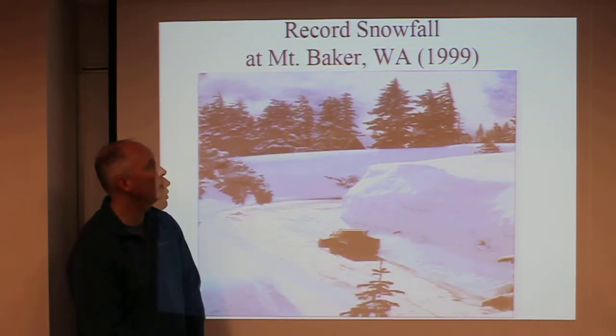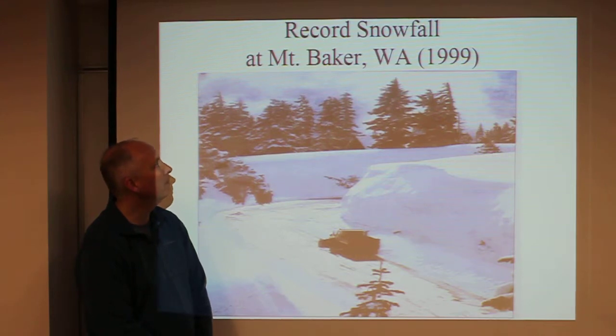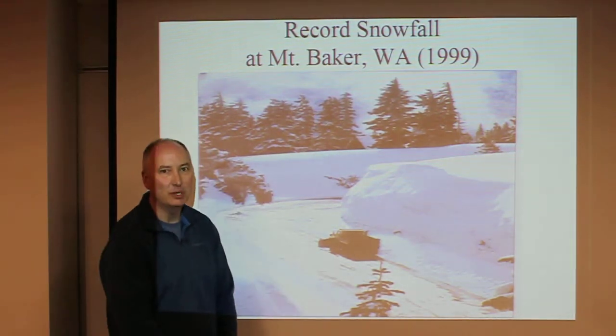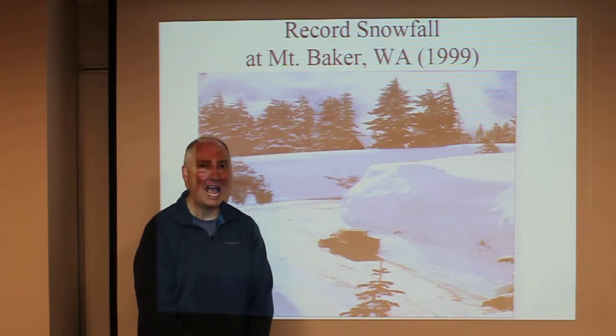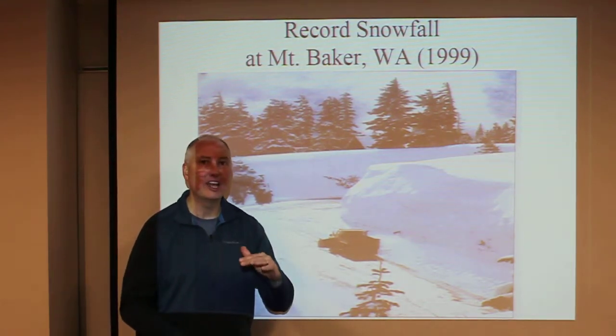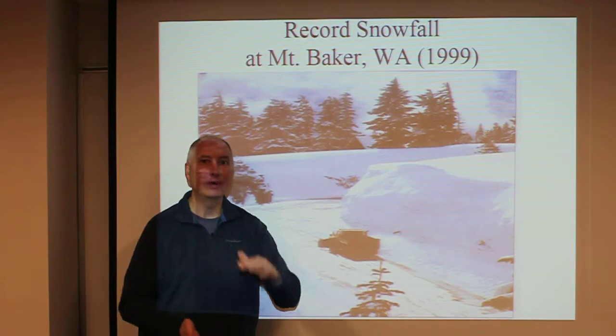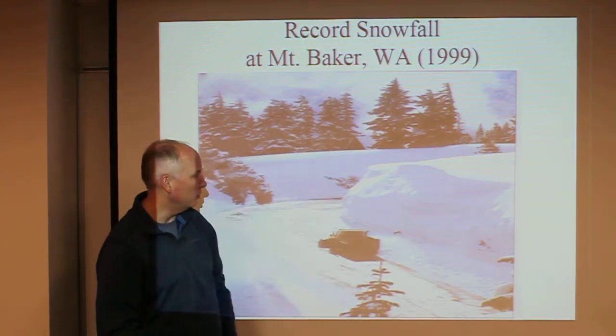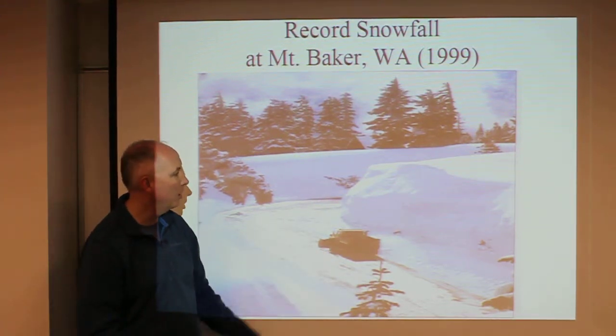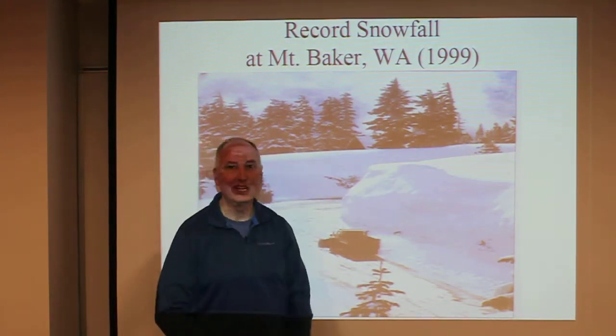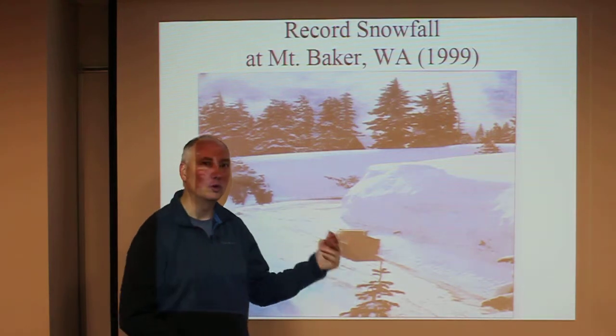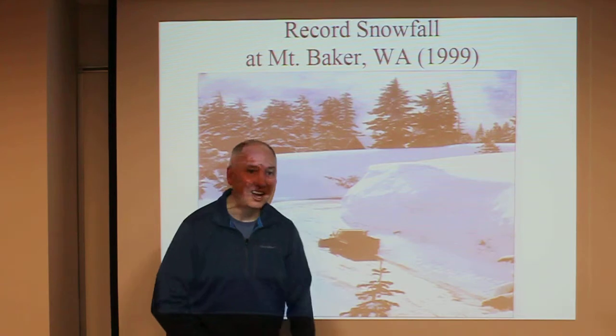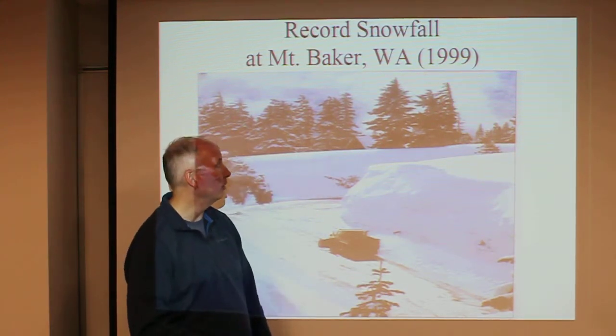For snow aficionados, this is the world record snowfall. Mount Baker, Washington occurred in 1999—they got more than 100 feet of snow. On average, it snowed 10 inches a day for 120 days during the snow season. This is the top of a three-story building, that's the snow plow, that's the road up to the ski area. I happened to live in Washington during this time period, and this never melted out this year. There was snow there year-round.